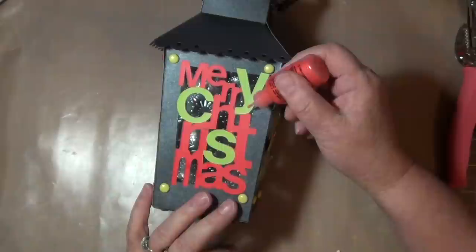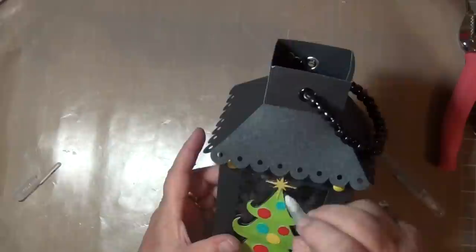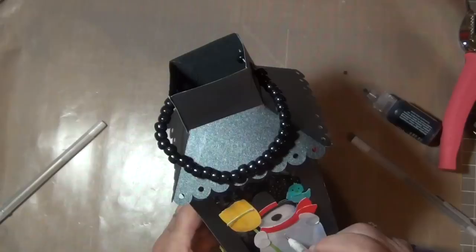And then the last step I decorated some of the die cuts with things that took some time to dry. Like this is liquid pearls. I added cranberries to the wreath and just little decorations to the Merry Christmas.